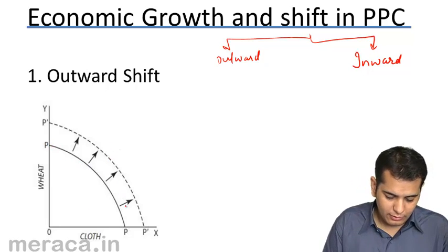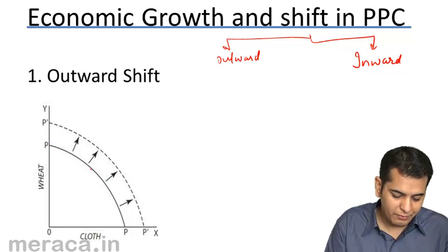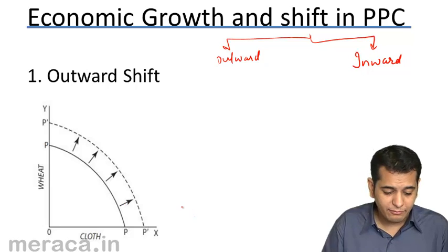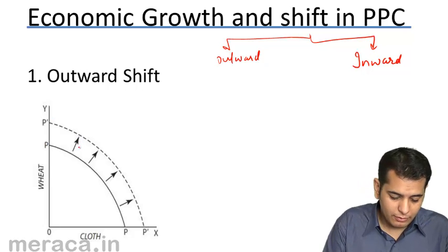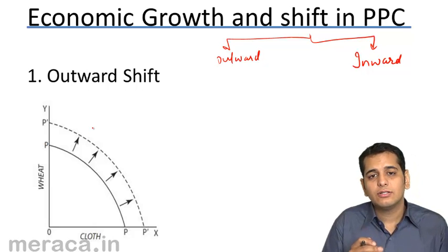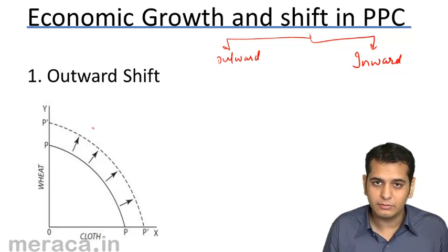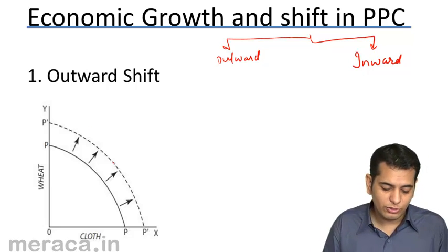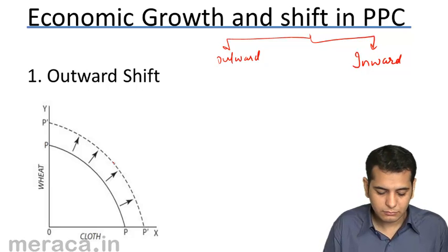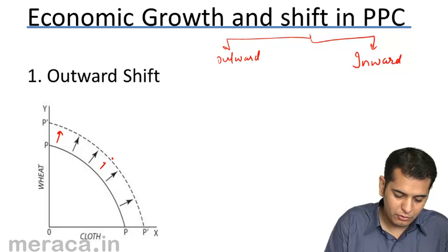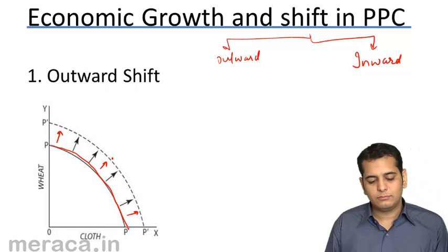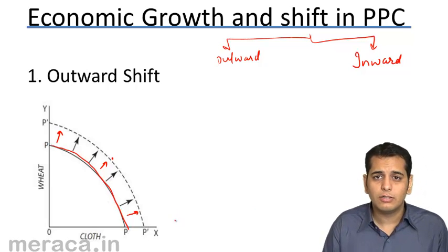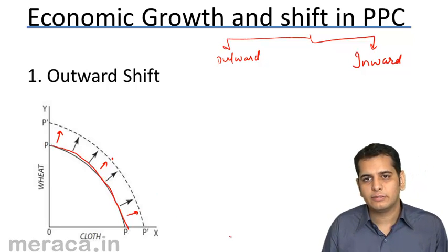Here we have been given a PPC curve named PP, and then we see another PPC curve named P'P'. If you observe, P'P' is on the outer side of PP — that is, it is beyond the original PPC curve PP. Now why does this curve shift outwards? What makes this curve shift outwards?